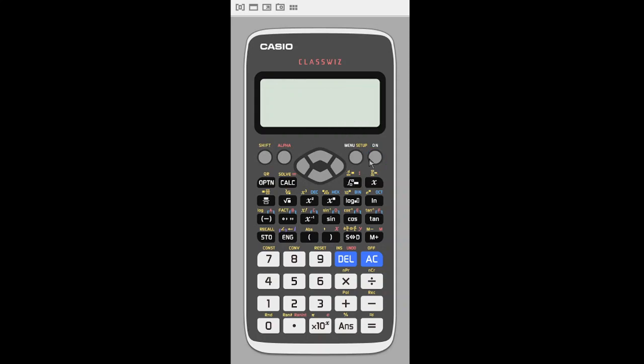First, you have to click on menu and make sure it's on calculate, so click one. While clicking menu, click on one. Once you're done, you have to click shift and setup.